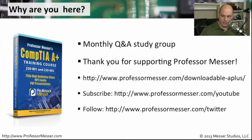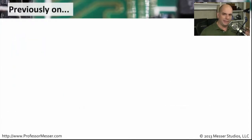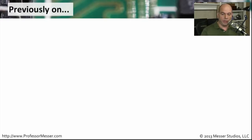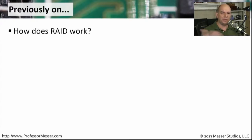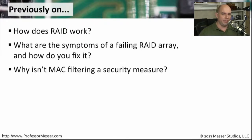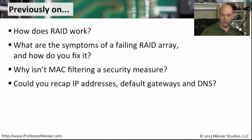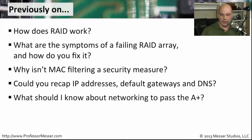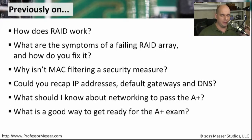There's quite a bit going on this month with the study group, but we went through a number of topics last month that I'm not going to repeat because the replays are available on the ProfessorMesser website. Last month we discussed how RAID works, the symptoms of a failing RAID array, why MAC filtering is not a security measure, IP addresses and default gateways and DNS, what you need to know about networking for the A-plus, and what's a good way to get ready for the A-plus exam.